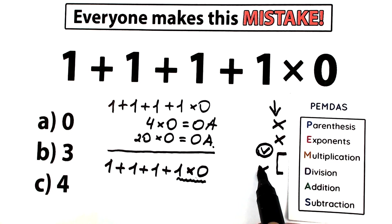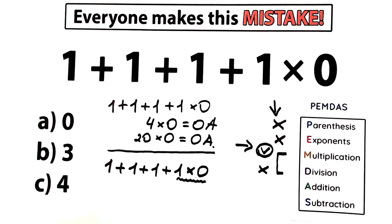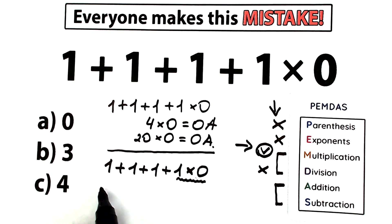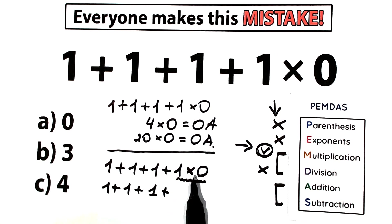We have multiplication, and the addition and subtraction group is our last group. So right here we should multiply first: 1 plus 1 plus 1 plus 1 times 0 — where 1 times 0 equals 0.